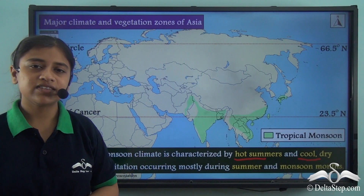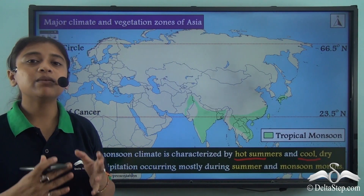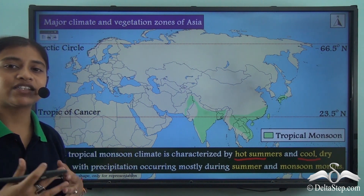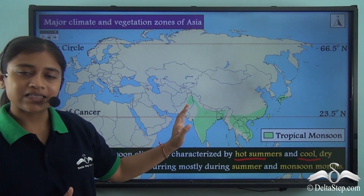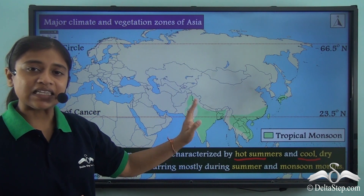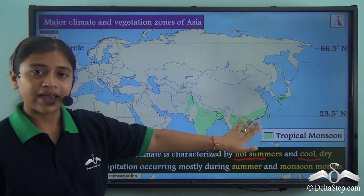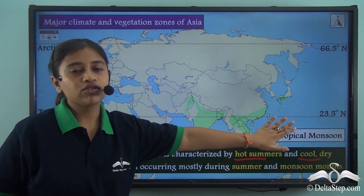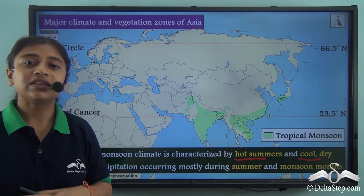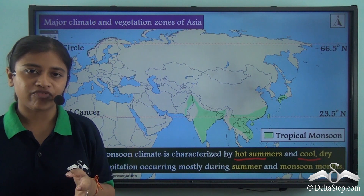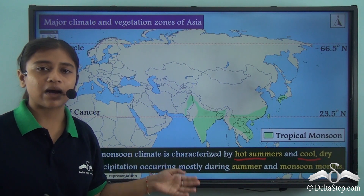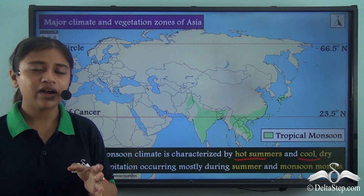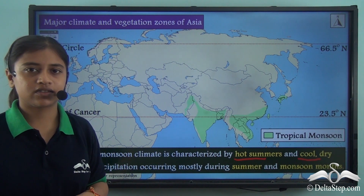From the map, the tropical monsoon type of climate mostly prevails over regions including parts of Pakistan, India, Bangladesh, Myanmar, south-eastern China, and also parts of Japan. These areas experience heavy rainfall during summer and monsoon months, along with hot summers and cool dry winters.